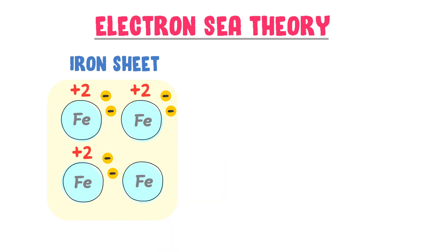This process of losing valence electrons would continue until all the atoms of iron sheet will lose their valence electrons and will become positive ions.